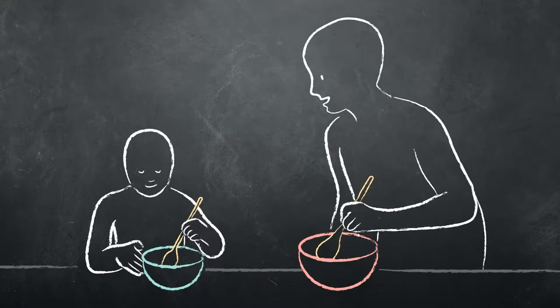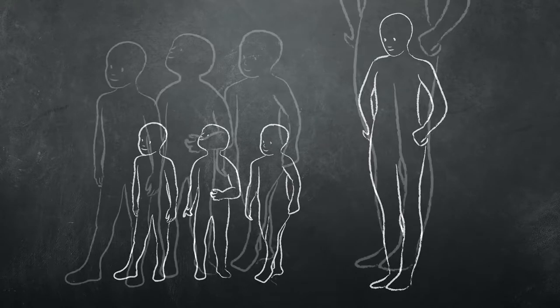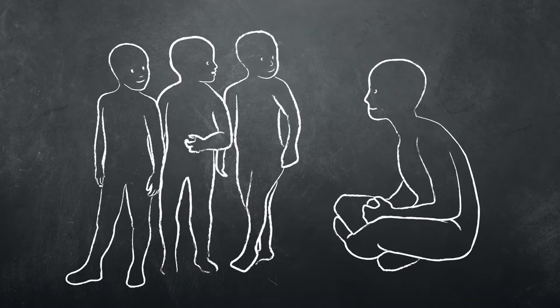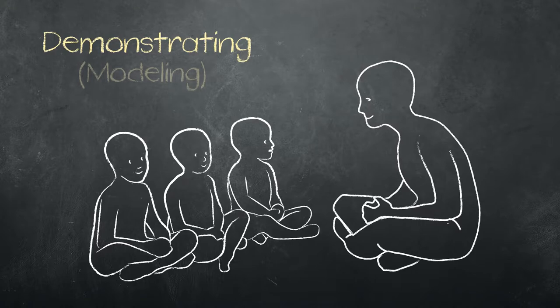Children learn by copying what they see others do. So rather than just telling students what to do, it's more effective for the teacher to show them what to do. This method is called demonstrating, or modeling.